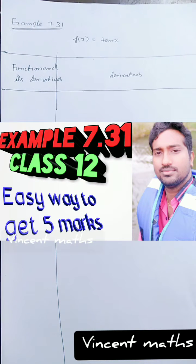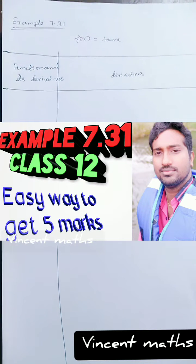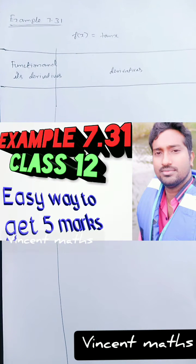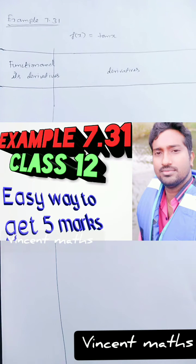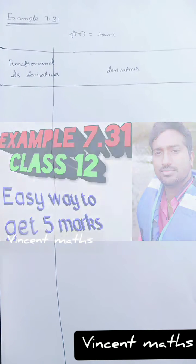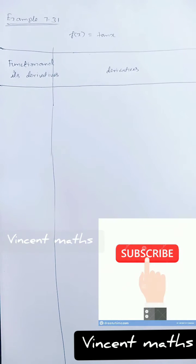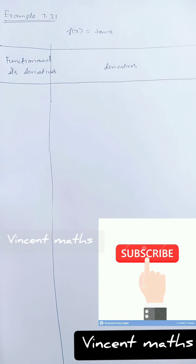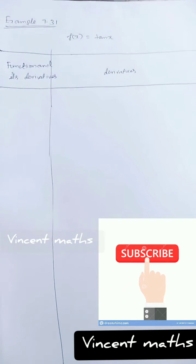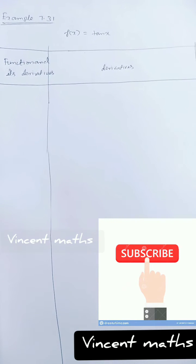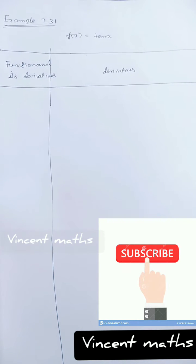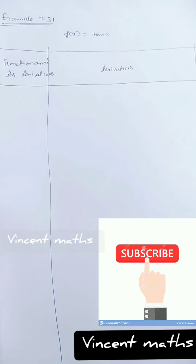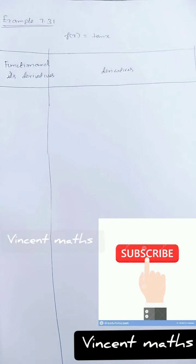Hi friends, this is Vincent. We are going to do Example 7.31 from the 12th standard. Students find it very difficult to differentiate this, but this is an easy method. It is important for 5 marks. There are chances for this in the exam — Example 7.31.